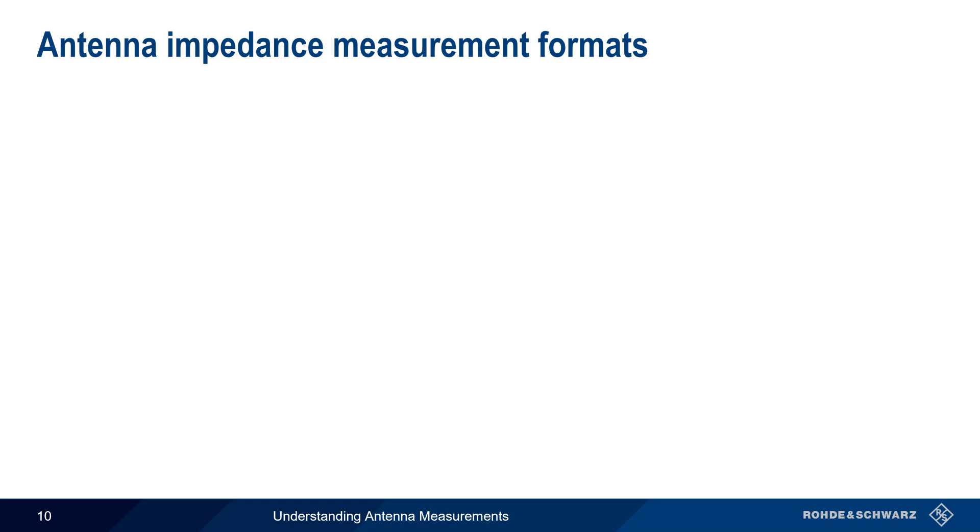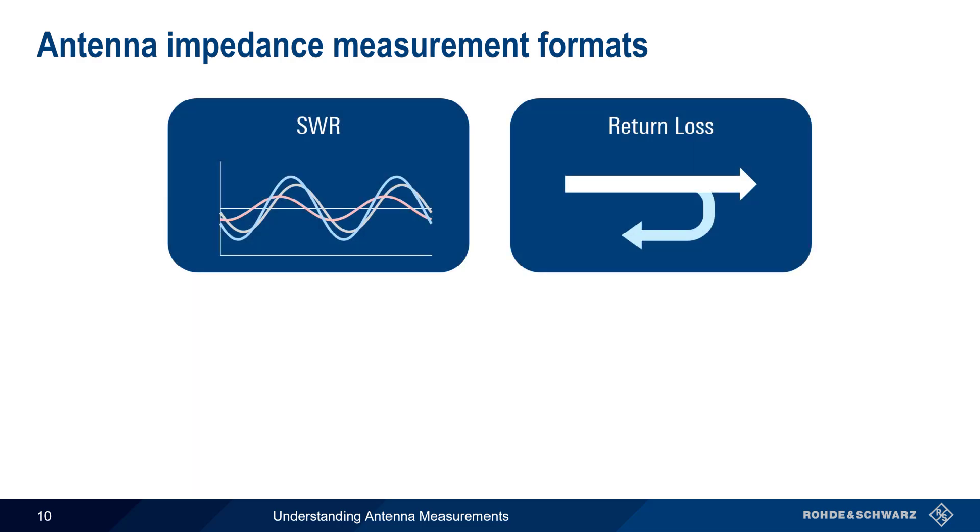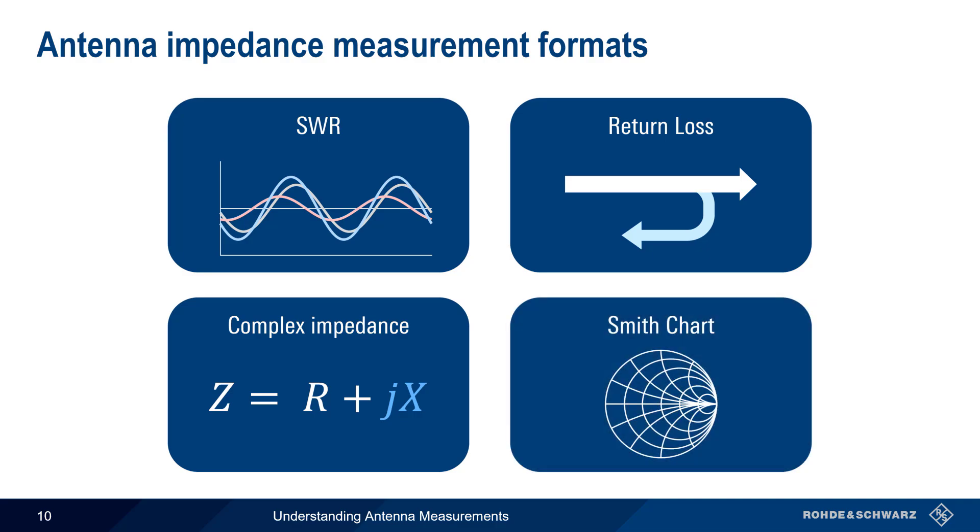Antenna impedance measurements are typically displayed in four formats: standing wave ratio, return loss, complex impedance, and the Smith chart. In the remainder of this presentation, we will explain and provide examples of each of these formats.